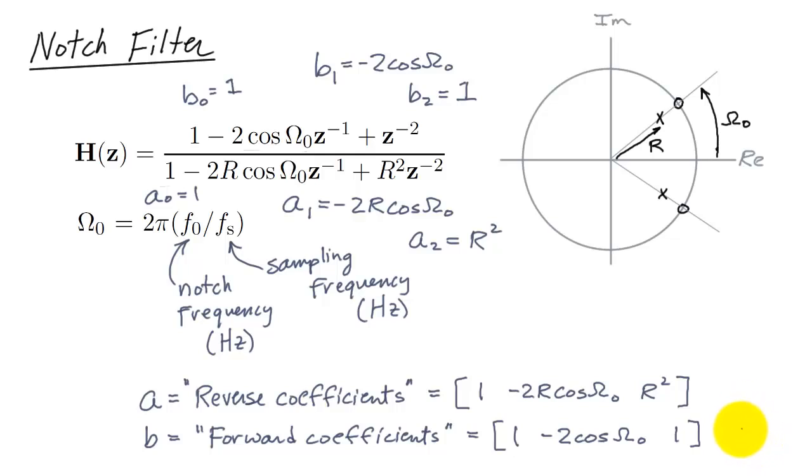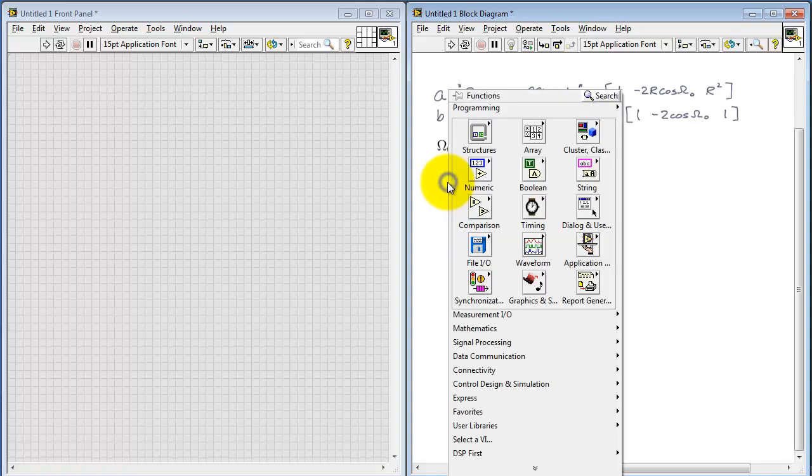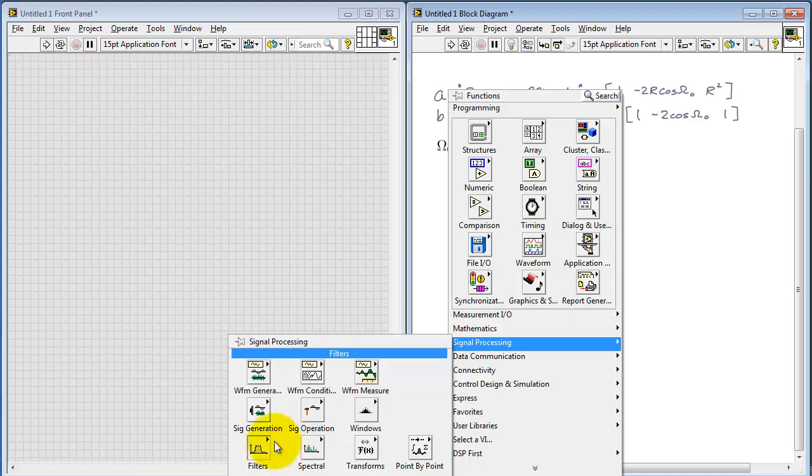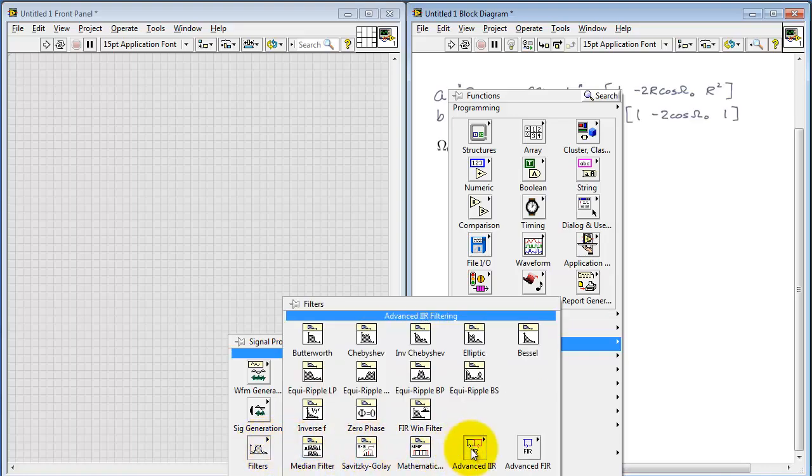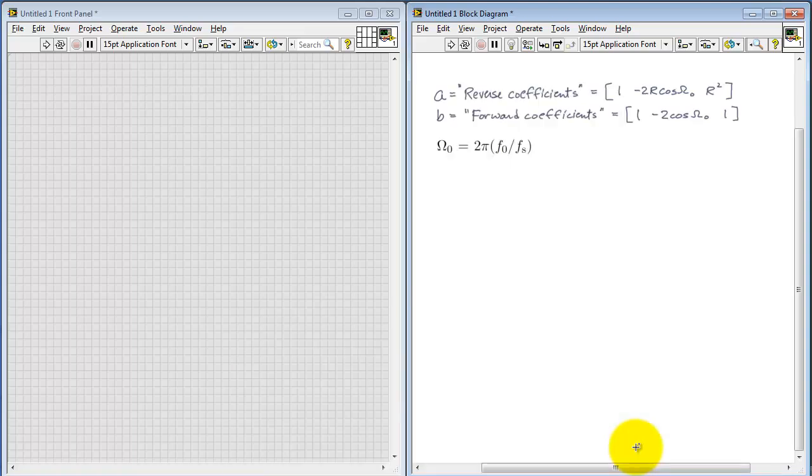Now let's see how we can apply these arrays of coefficients to the LabVIEW digital filter. Look under signal processing, then filters, then advanced IIR, and then pick out IIR filter. That's an abbreviation for infinite duration impulse response filter.